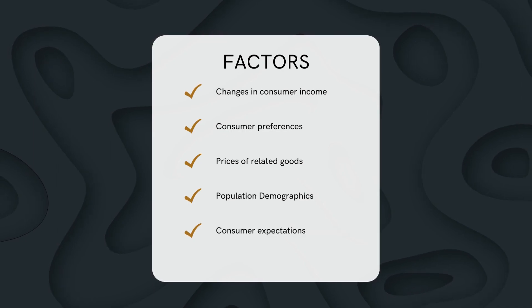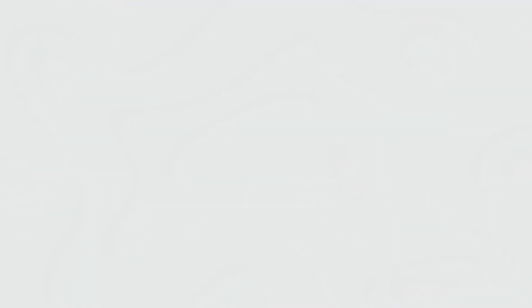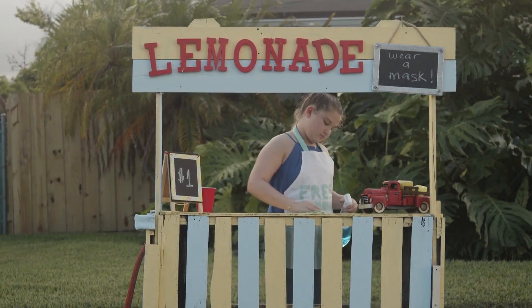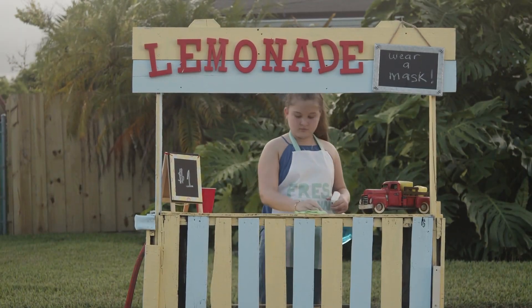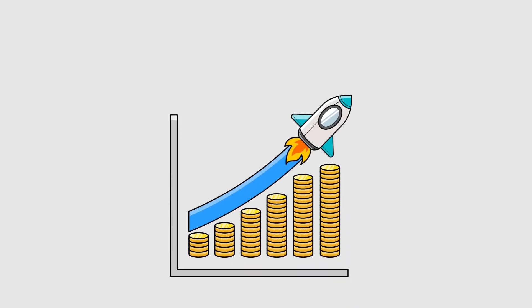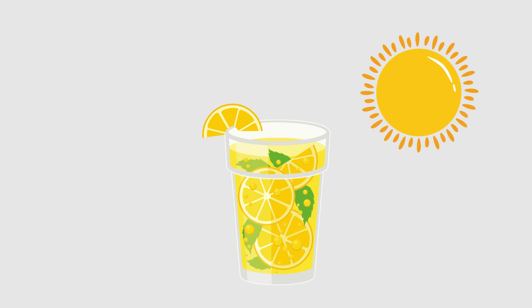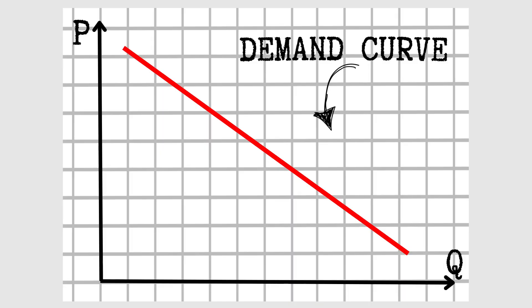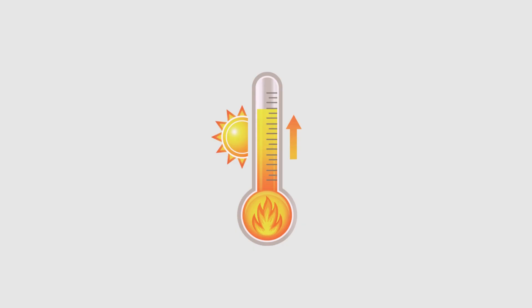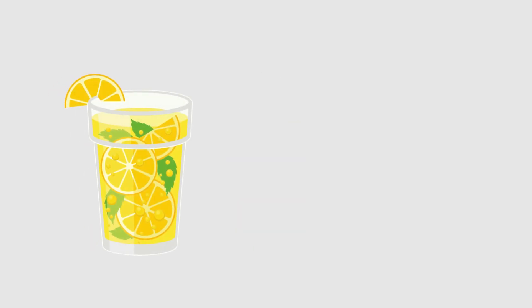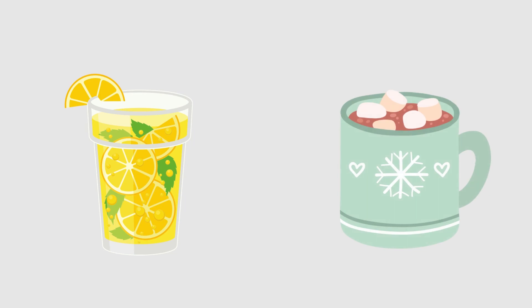Let's illustrate this with an example. Imagine you're a lemonade stand owner, and you've noticed a significant increase in your sales of iced lemonade during the summer months. This exemplifies how consumer preferences can impact the demand curve — as the temperature rises, people are more likely to want a refreshing cold drink instead of a hot one.